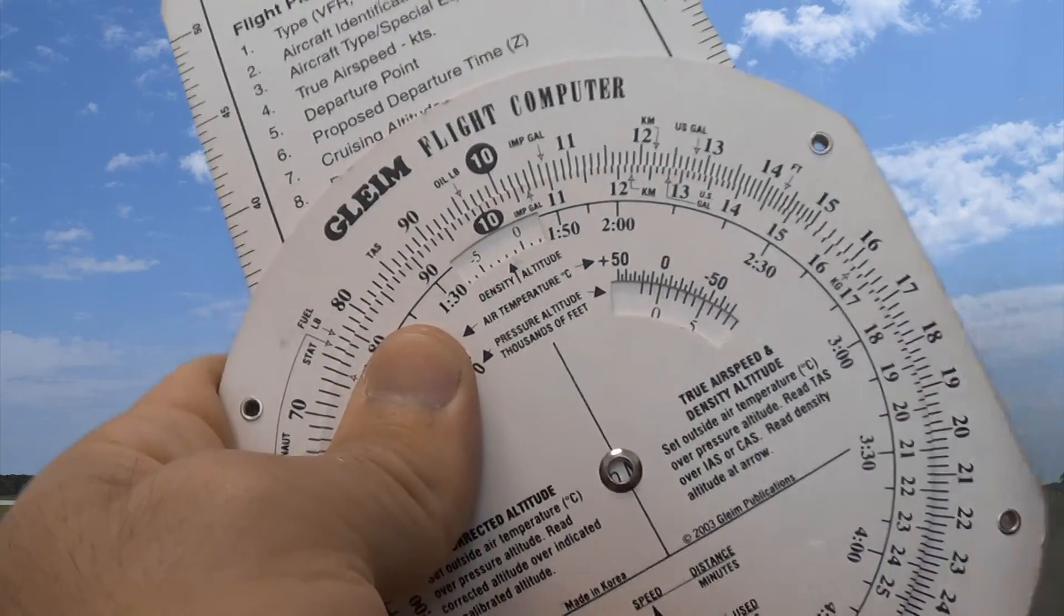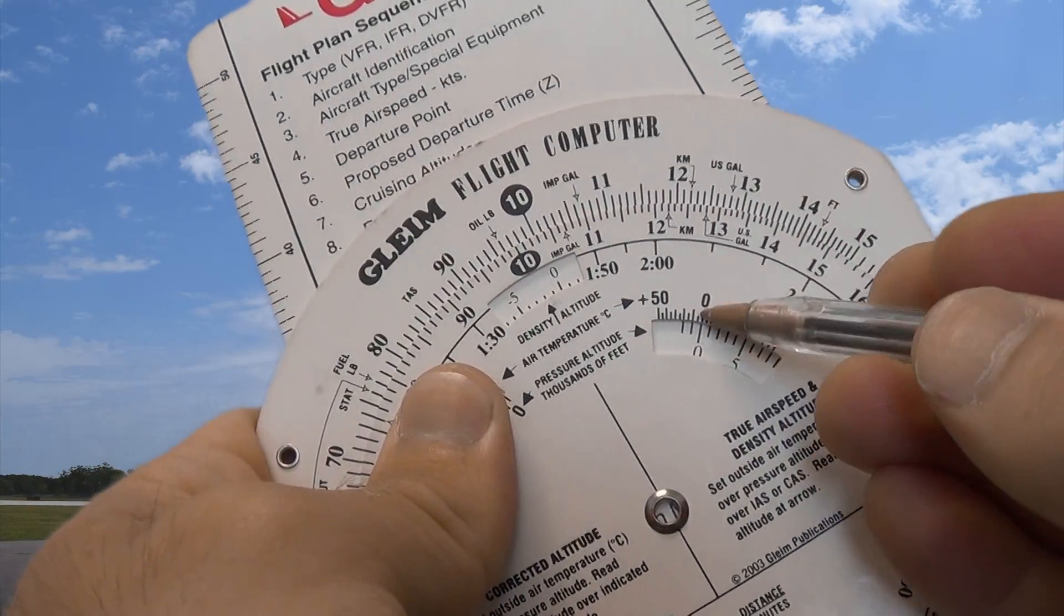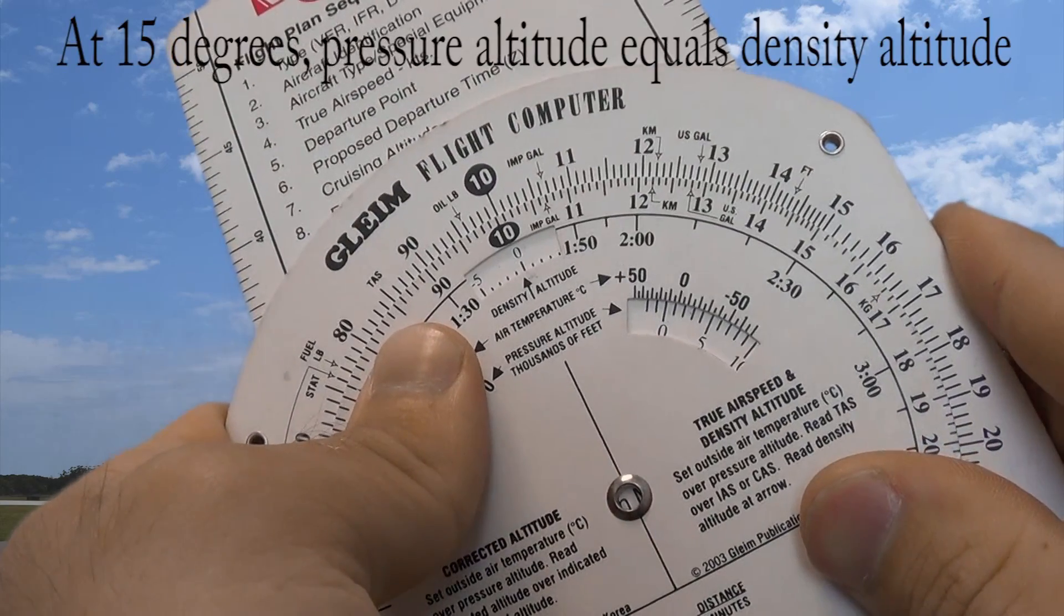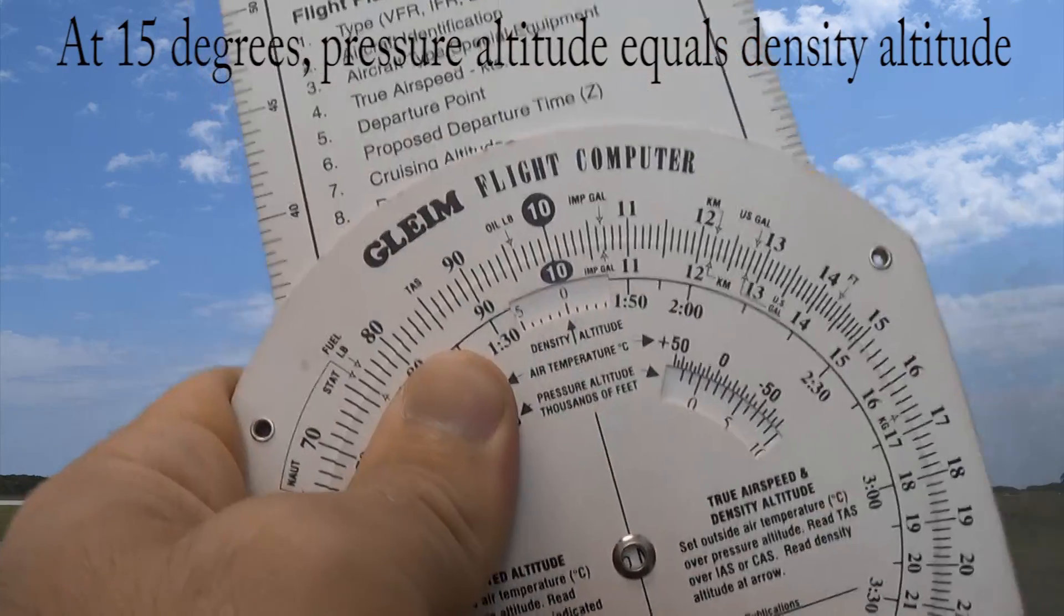If we find our pressure altitude to be 0 feet and we're at 15 degrees Celsius, we'll see that's on a standard day, our density altitude will be roughly the same, 0 feet.